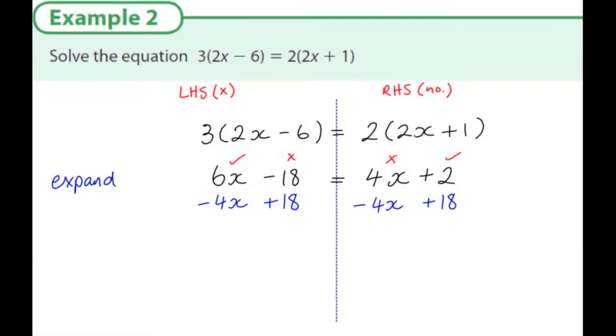Now let's see what do I have. I have 6x minus 4x, that's 2x. Minus 18 plus 18, well that's 0. And that left-hand side is equal to 4x minus 4x, well that's equal to 0. And I have 2 plus 18, which is 20. So I have 2x equals 20.